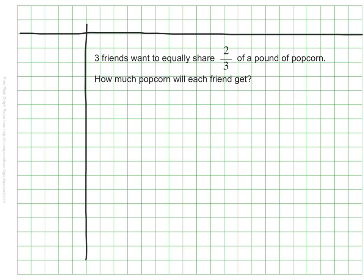Here we see that three friends want to share 2 thirds of a pound of popcorn and they want to share it equally. The question is how much popcorn will each friend get?